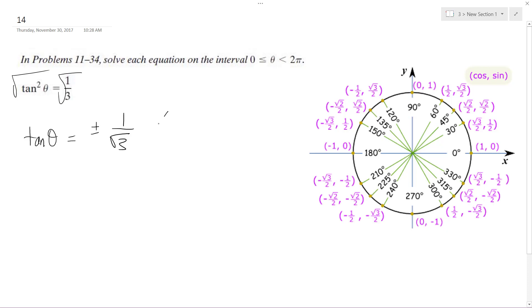So tangent equals y over x, so that means we're going to have one over root three, and this would be two. That's the basic outline of it.